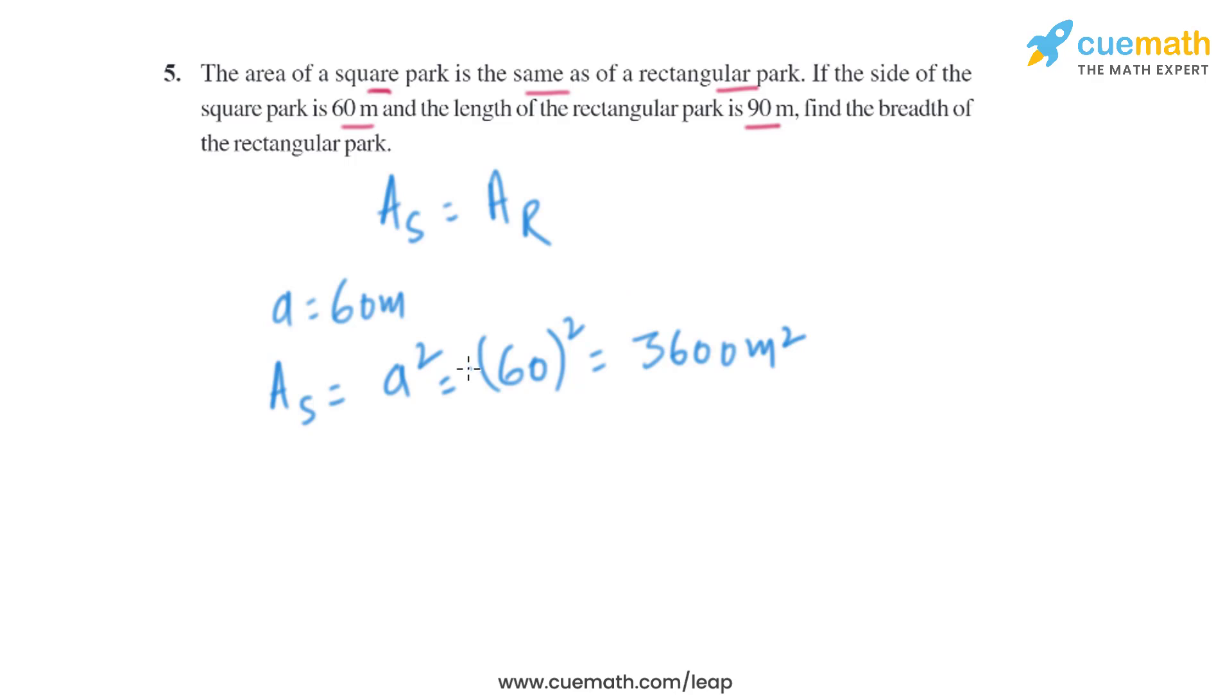The area of the square park is the same as the area of the rectangular park. We know that the area of a rectangle is basically length times breadth.